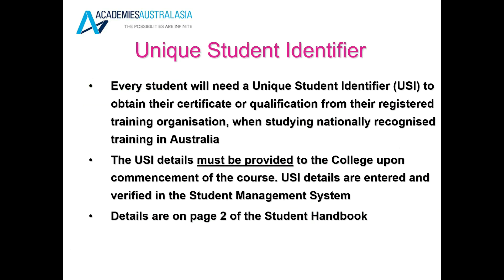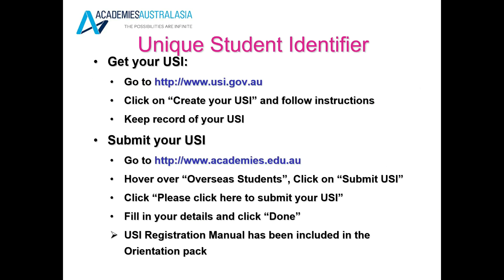The Unique Student Identifier — the USI. You will need to set up a USI and you cannot get a certificate or qualification without it. To get a USI please go to www.usi.gov.au and create your USI following the instructions. Once you receive your USI, go to academies.edu.au, click on Submit USI, and follow the instructions to submit your USI into Academies Australasia.